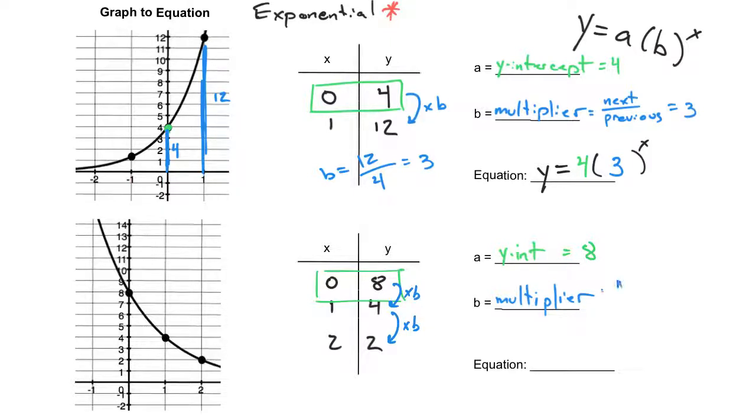So if you do your next over previous for our multiplier, in this example, that's going to be 8 divided by 4, which in this case is equal to 1 half. That makes sense that our multiplier is 1 half, because as we said at the very beginning, this graph is decreasing, so your multiplier must be less than 1. If you took 4 and multiplied by 1 half, you would also get 2.